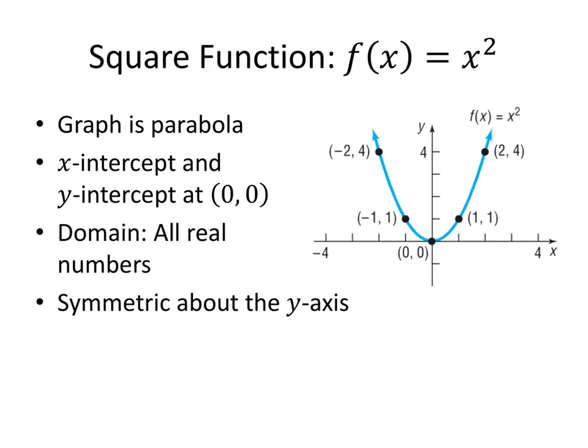Next up, a little bit more interesting: we've got the square function, f of x equals x squared. The graph looks like a parabola. The x-intercept and the y-intercept are both at the origin. The domain is all real numbers — there's nothing preventing us from plugging any numbers into x squared. The graph is symmetric about the y-axis; if we were to flip this graph over, the two sides would swap and the graph would not change.